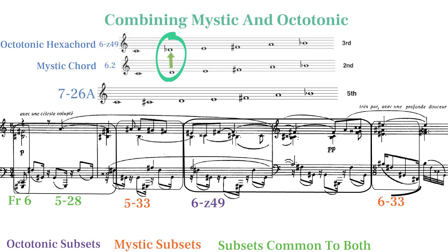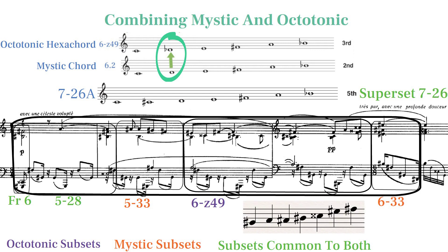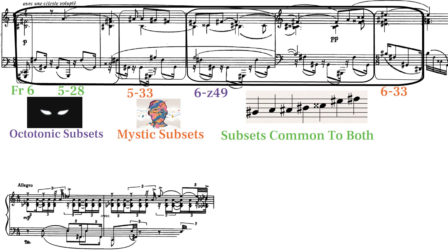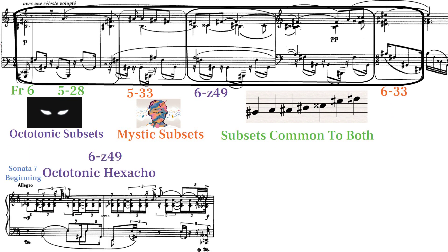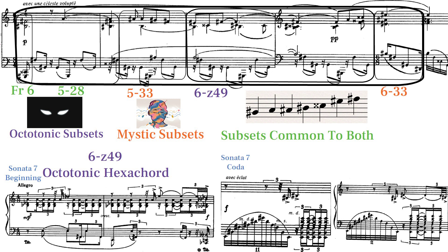We can understand this passage as using the fifth mode of 726A based off of G-sharp. The addition of mystic sets in Theme 2 allows for a consonant contrast to the harsh octatonic sets of Theme 1. The same effect is achieved by starting with an octatonic primary motif and modifying it to a mystic version of the motif when it appears in the coda.